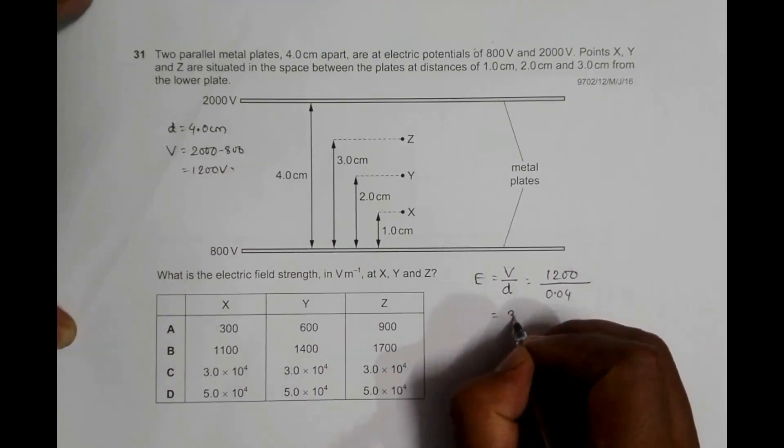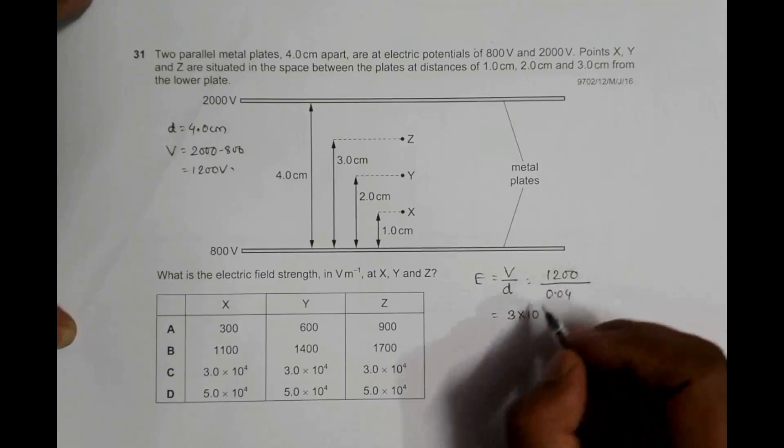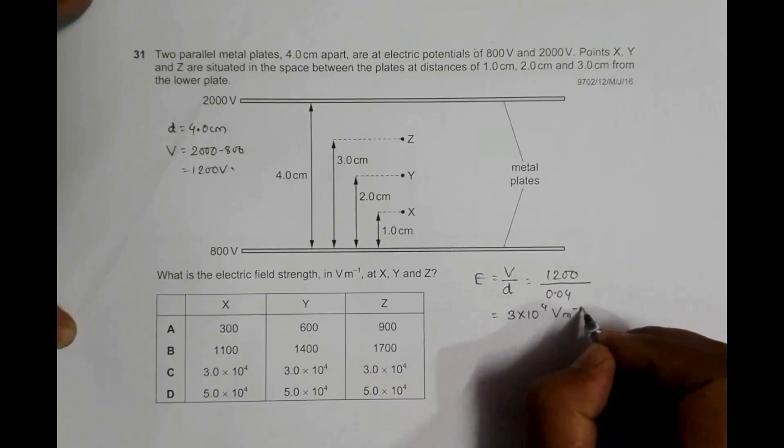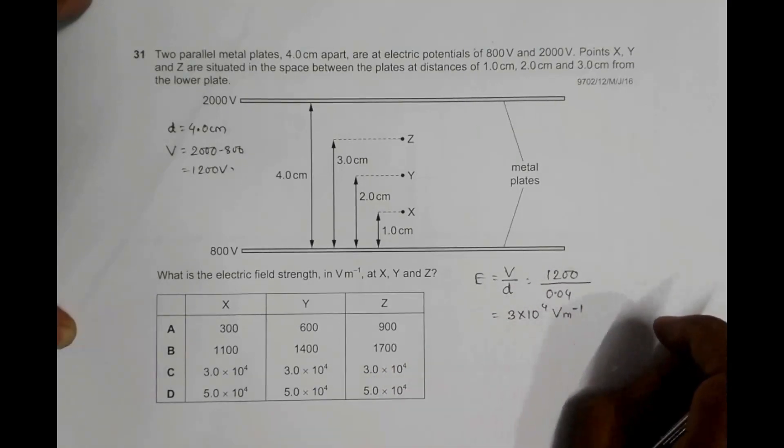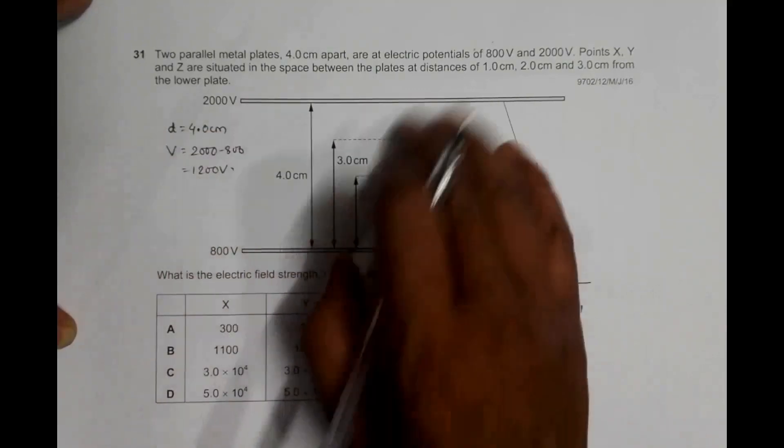And that gives us 3 into 10 to the power 4 volts per meter. Now, since the plates are parallel, the electric field is uniform everywhere inside this area.